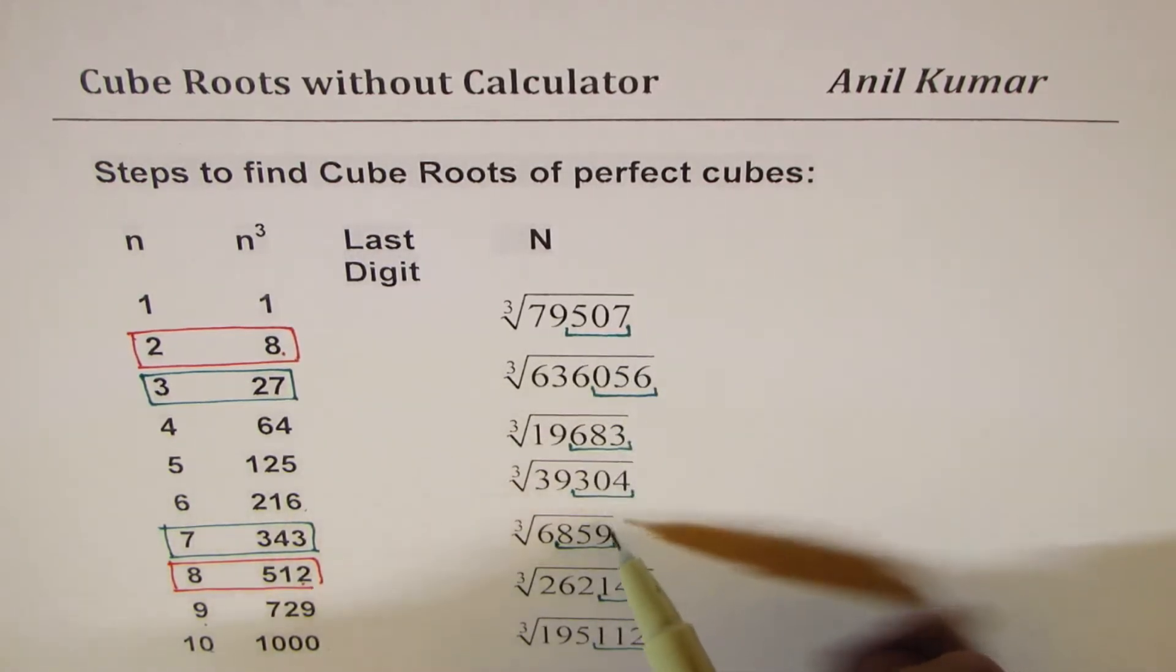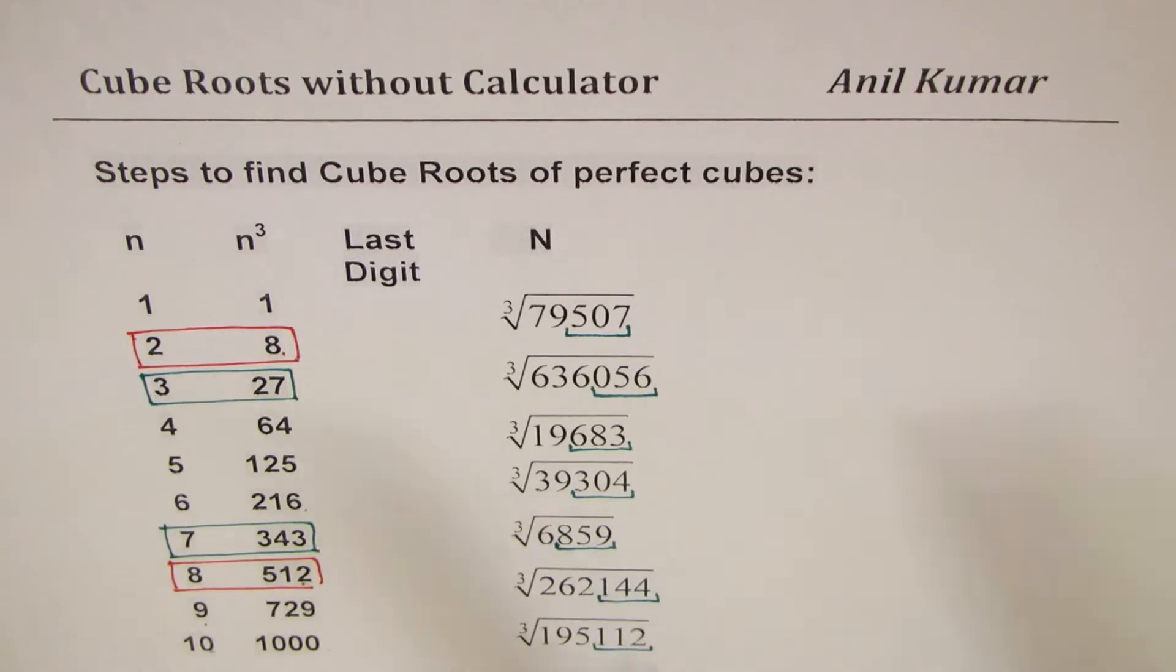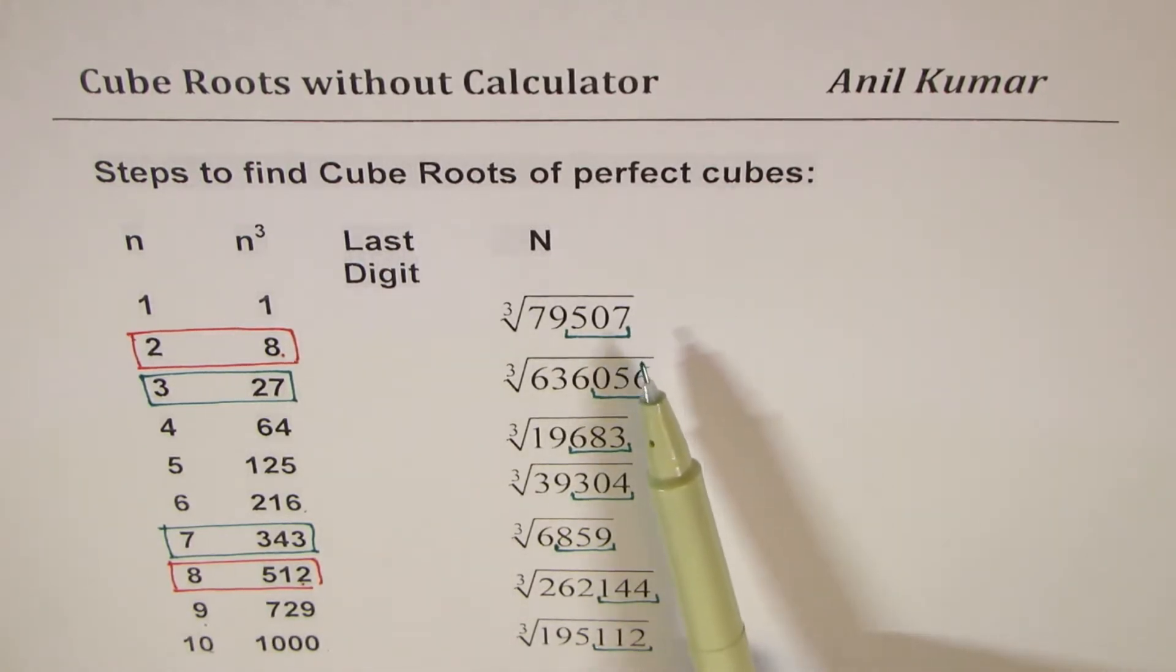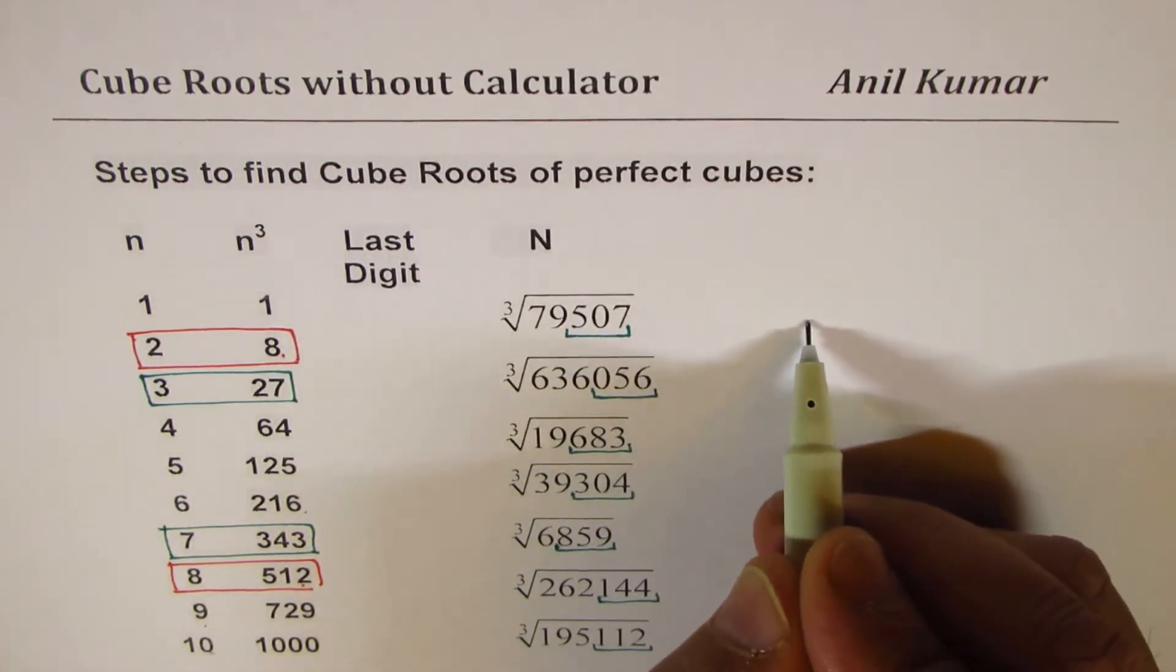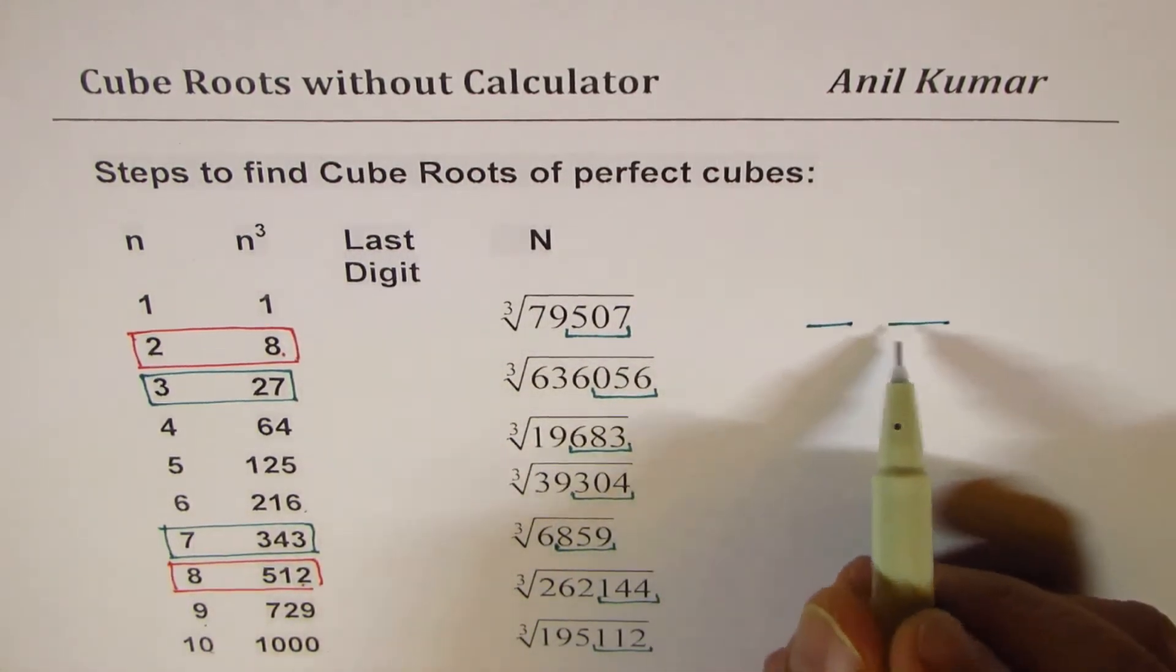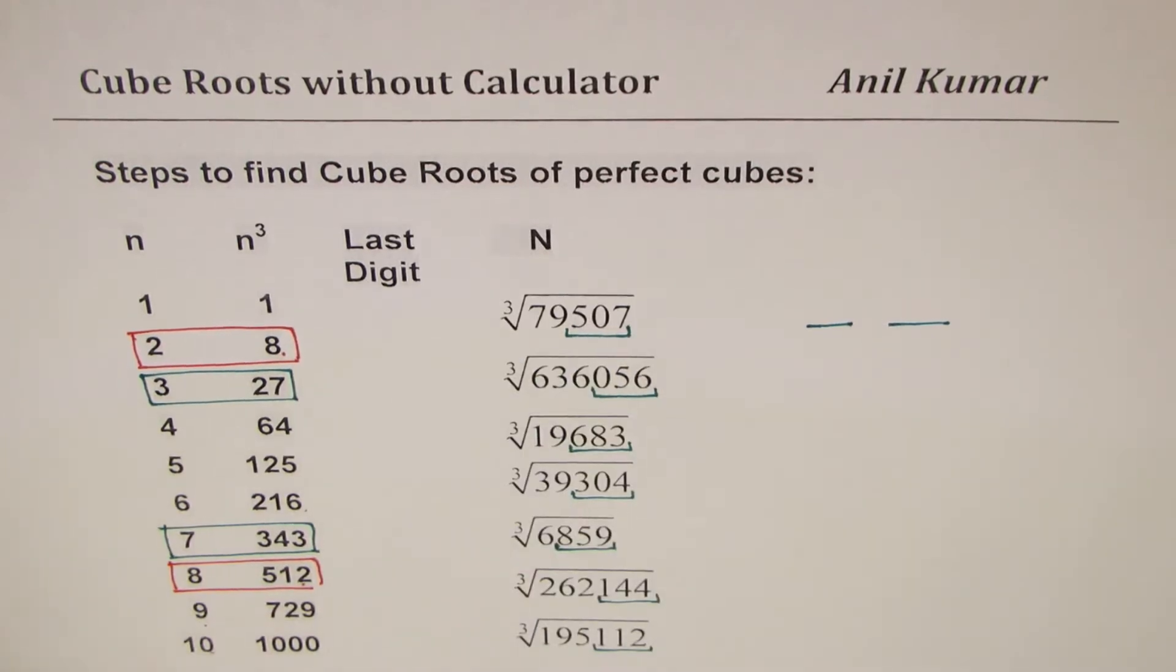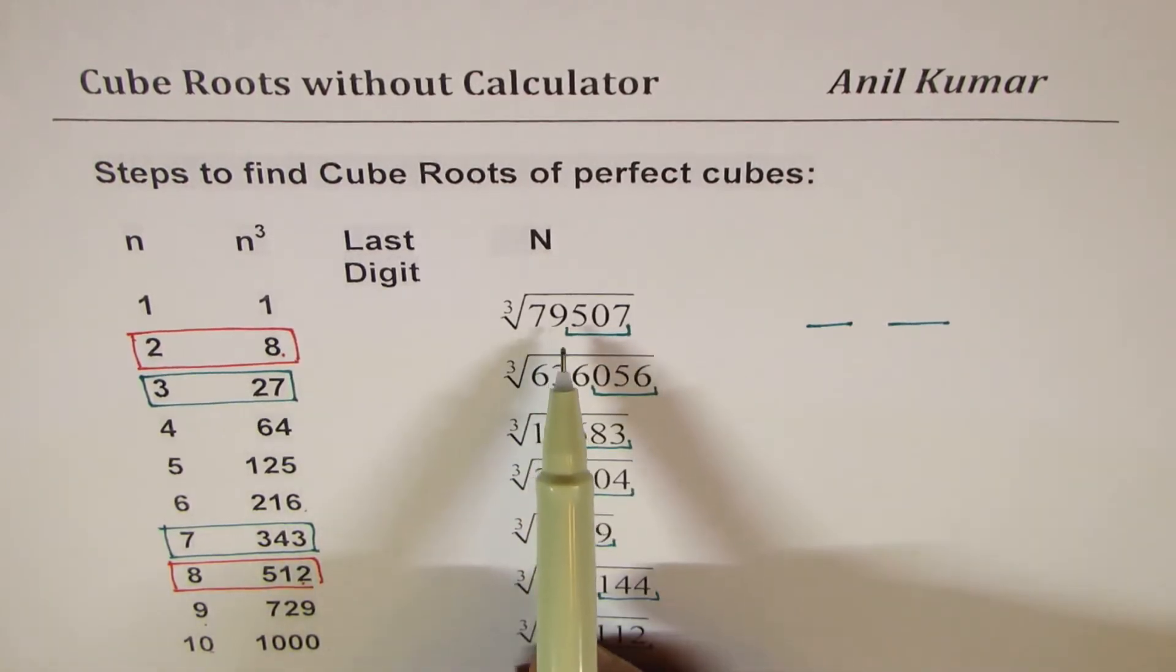So that becomes one group for us. The idea is to find cube root of all these perfect cubes. We'll do it in a minute. Now most of these numbers which I have taken, their cube roots are two digit. Now in the first one you can see the last digit is 7.